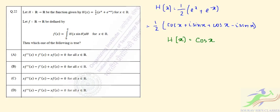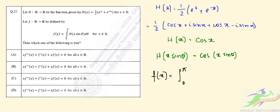From the integral definition, f(x) is given as the integral from 0 to π of h(x sin θ) dθ. So we can write this as: f(x) = integral from 0 to π of cos(x sin θ) dθ.